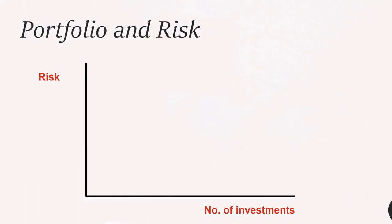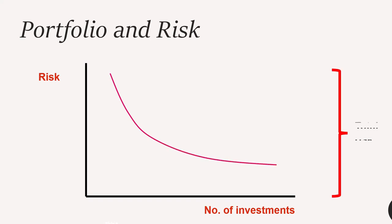Here is a pictorial representation of portfolio and risk. The sum of systematic risk and unsystematic risk is called total risk. Therefore, a portfolio of shares has a total risk made up of systematic risk and unsystematic risk. As more share investments from different industries are added to the portfolio, the unsystematic risk is diversified away and the amount of total risk reduces to approach systematic risk only.